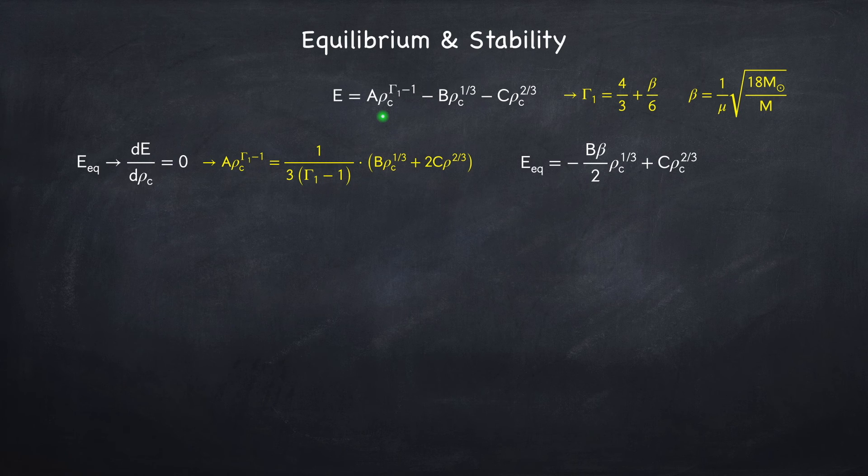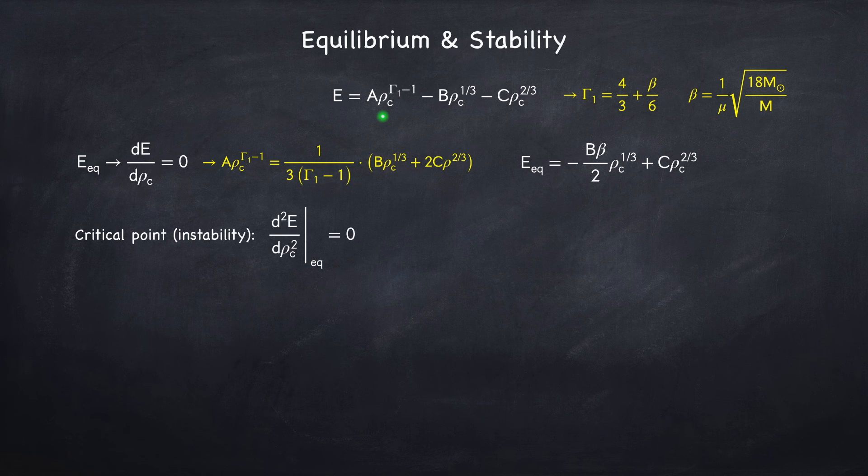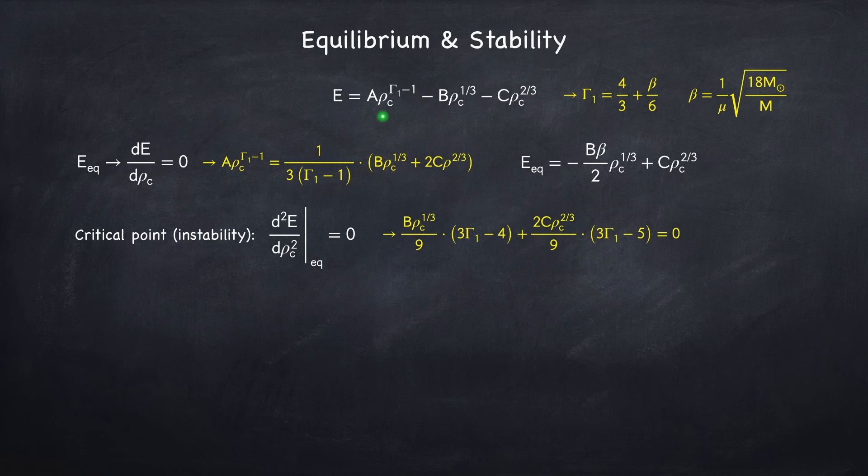Recall from chapter 3 that a star is stable if its second derivative with respect to the central density at the equilibrium point is positive. So the critical point, which is when the GR instability sets in, is found by evaluating the second derivative at the equilibrium point and setting it to zero. Again, I'm going to spare you the algebra and just give you the result. So here all I did was take two derivatives of this equation, set it to zero, and then plug this condition in, which leads to this equation for the central density.